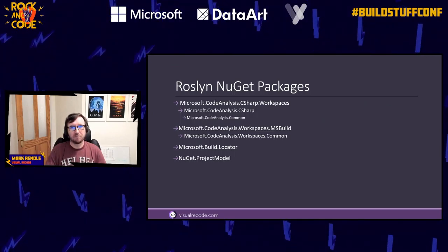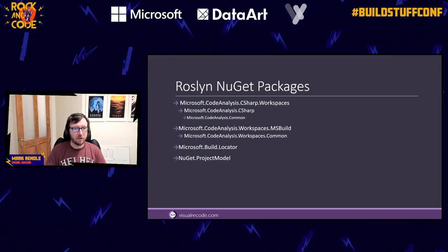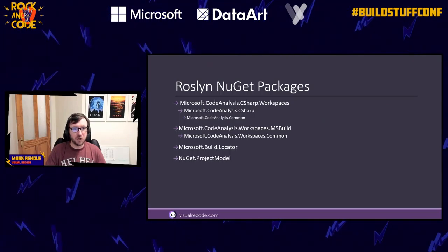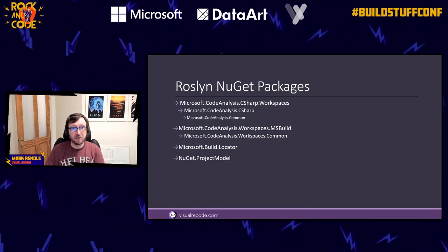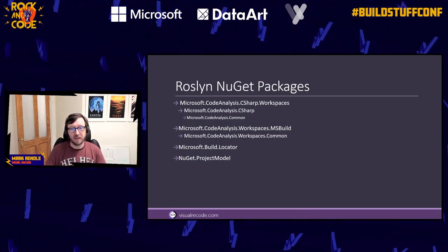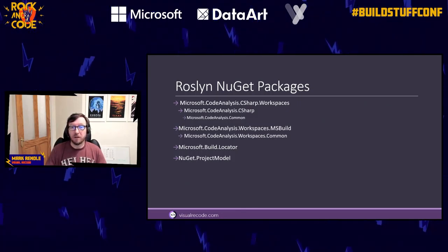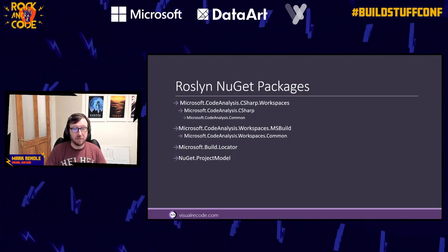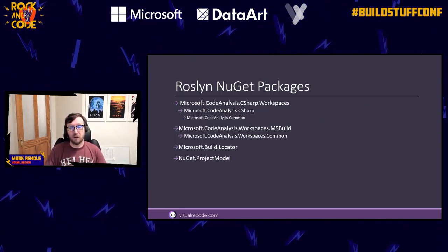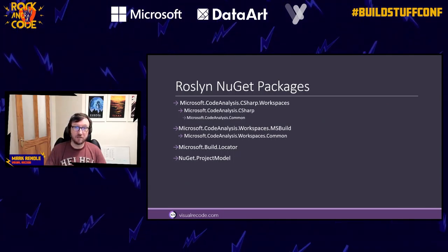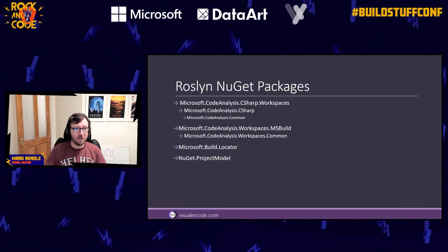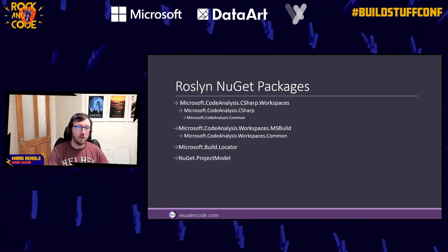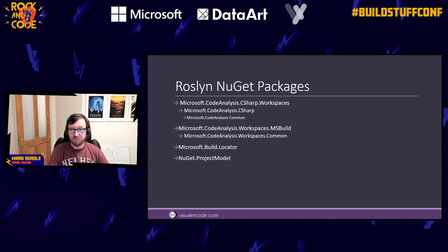Roslyn consists largely of some NuGet packages. The primary ones are workspaces packages: Microsoft.CodeAnalysis.CSharp.Workspaces, which brings in Microsoft.CodeAnalysis.CSharp. This is the package that understands C#, parses it, and turns it into effectively a DOM - like a document object model but for C# code instead of XML or HTML. We also have Workspaces.MSBuild which understands the Visual Studio project model - solution files and project files. There's also Microsoft.Build.Locator and NuGet.ProjectModel.